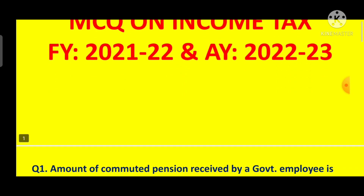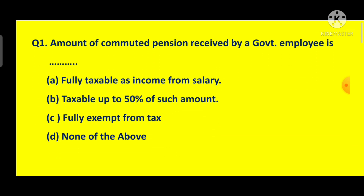Question No. 1: The amount of commuted pension received by a government employee — we know that after retirement, within one year, an employee can commute some parts of their pension. Maximum 40% of the pension can be commuted. Commuted pension is fully exempted from tax. It is fully exempted under Section 10-10A.